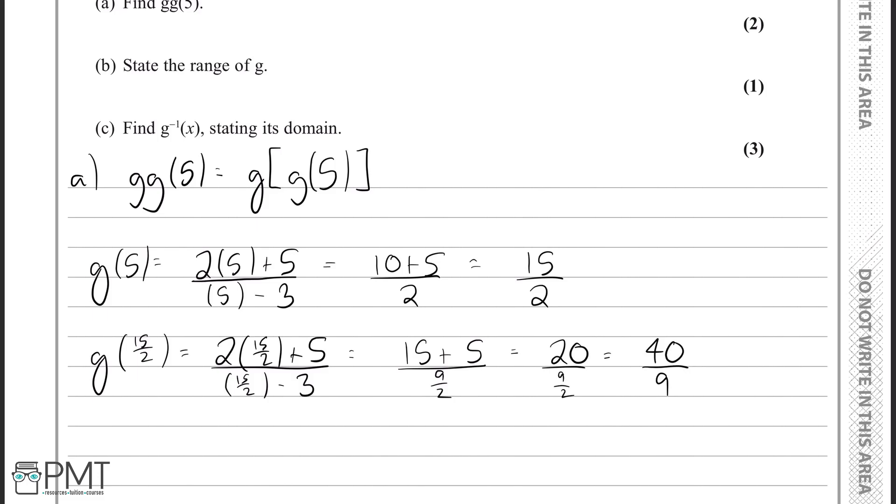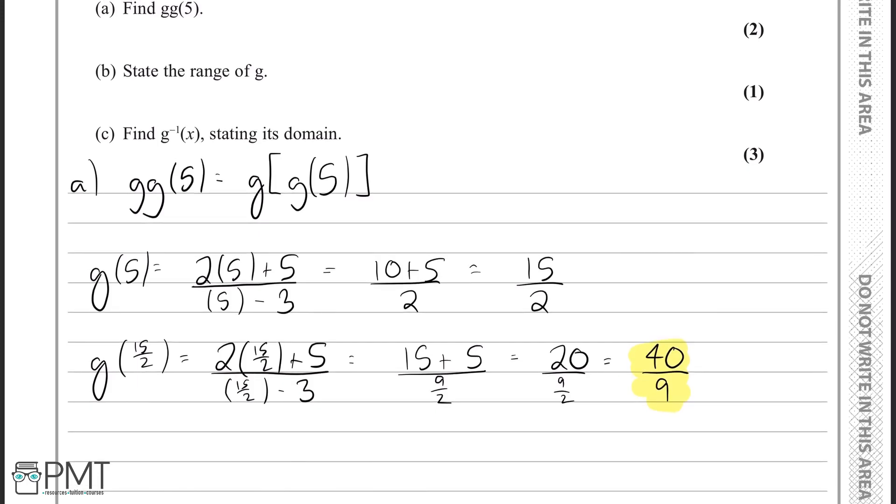And that is the final answer for this question. Now, the breakdown for marks here is you would get one mark for finding what g of 5 is, which we've done here. And you'll get one mark for the final answer, and that will give you the two marks on the question.